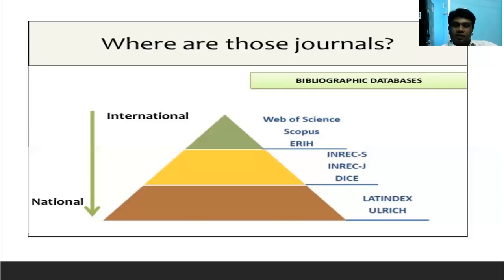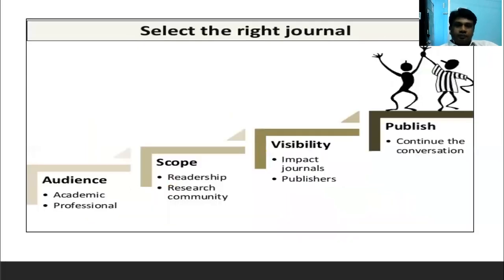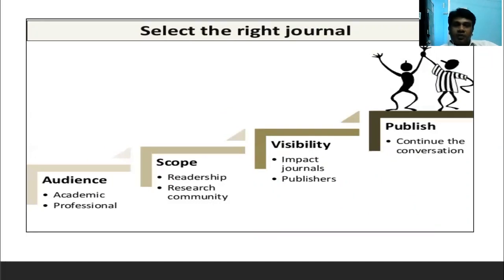To avoid scam journals, prefer high international standard journals with a good impact factor — for example, Web of Science or Scopus. Selecting the right journal is critical. Writing the research paper is very difficult, so it should be published on a credible platform. First, find the academic and professional background of the research paper, then the research community and readership — that is the scope of the publishing journal — and then identify reputable publishers.